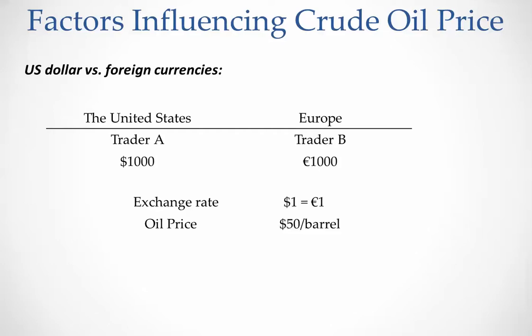Let's assume crude oil price is $50 per barrel. Trader A has $1,000 and can buy 20 barrels of crude oil, or futures contracts equivalent to 20 barrels: $1,000 divided by $50 equals 20 barrels. Trader B has 1,000 euros and must first go to the exchange to convert those 1,000 euros to the equivalent dollar amount, which is $1,000.